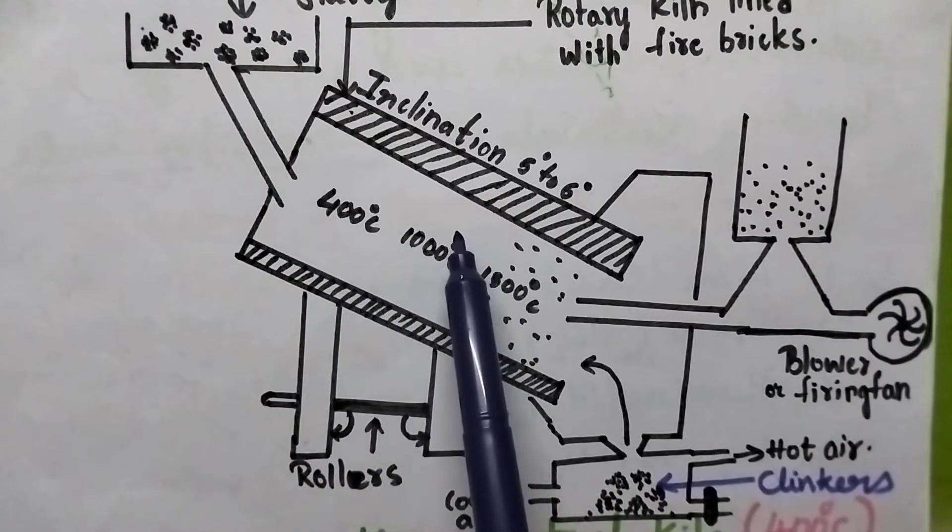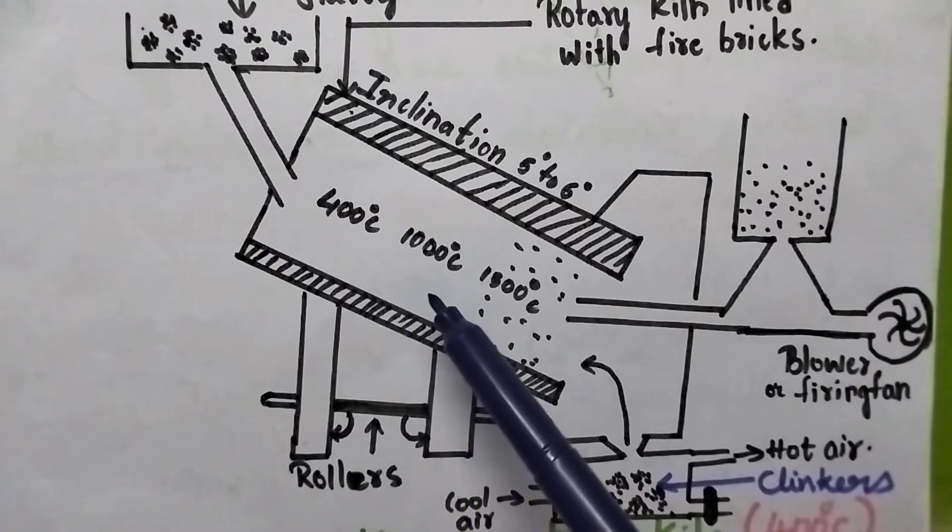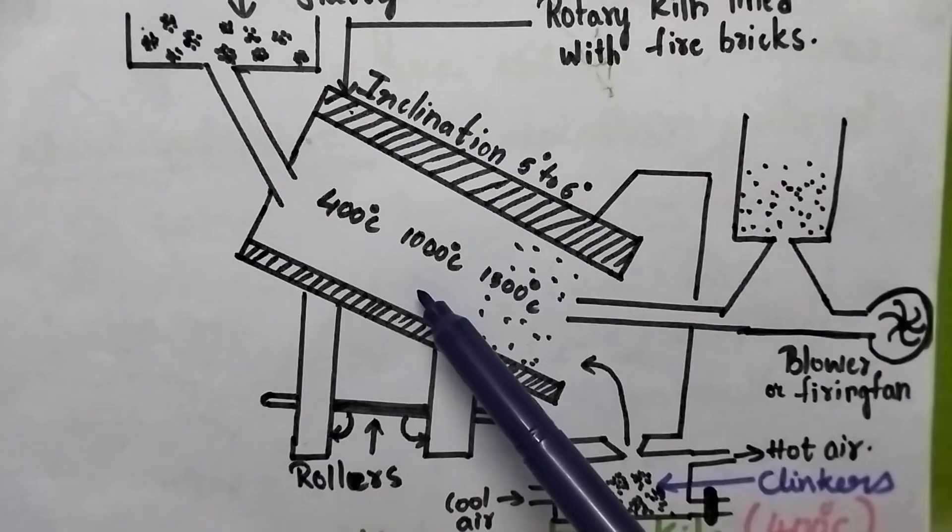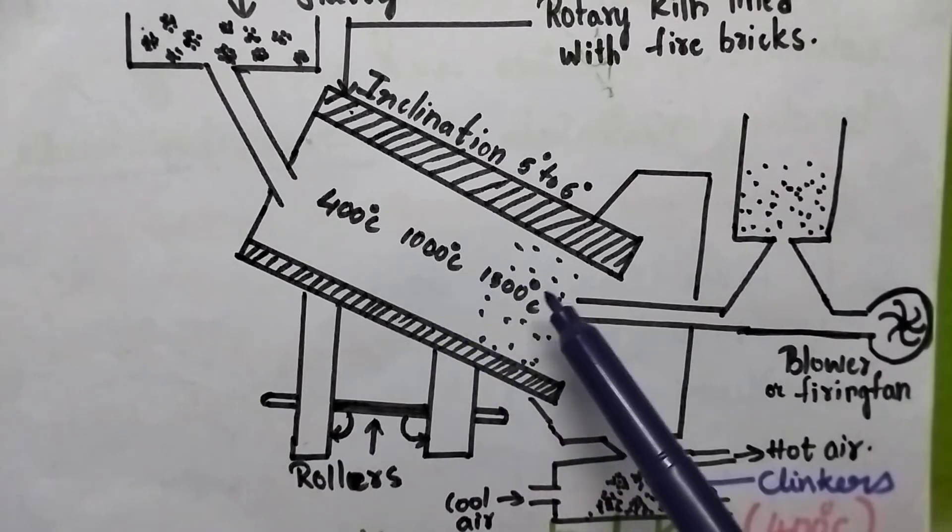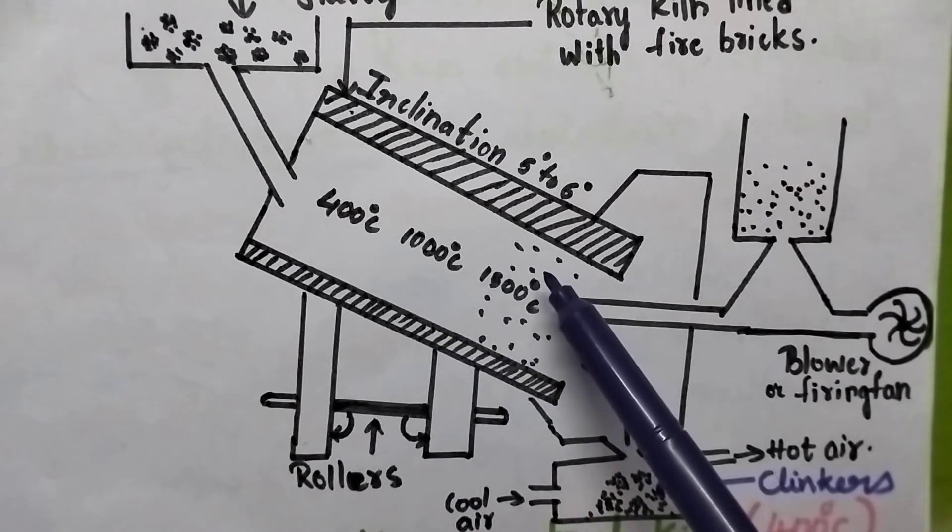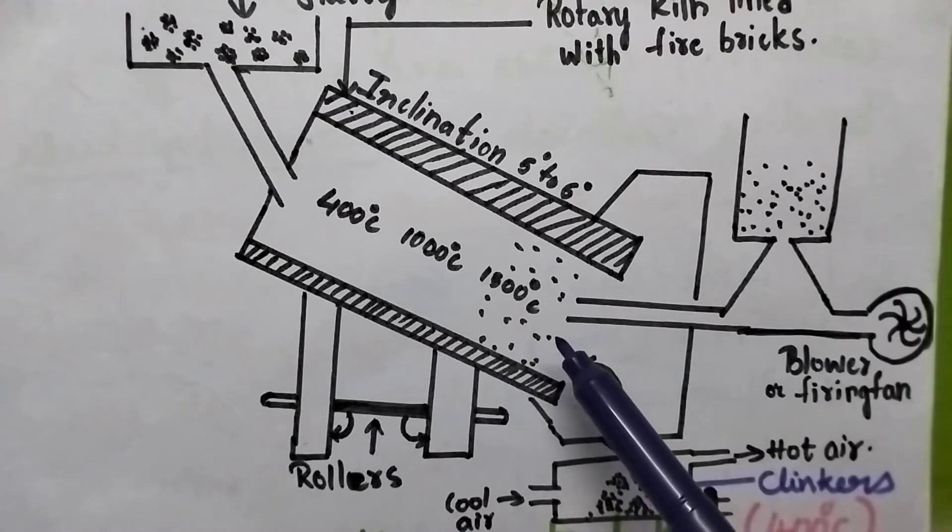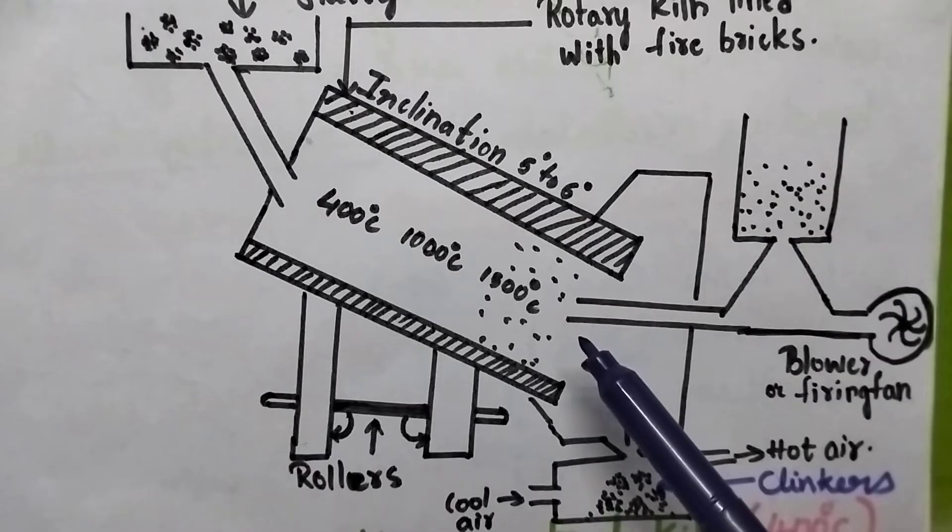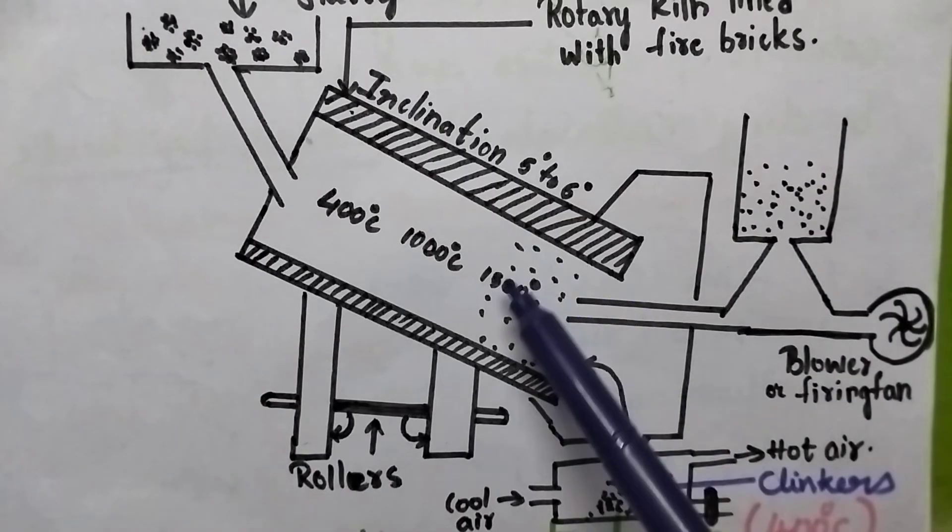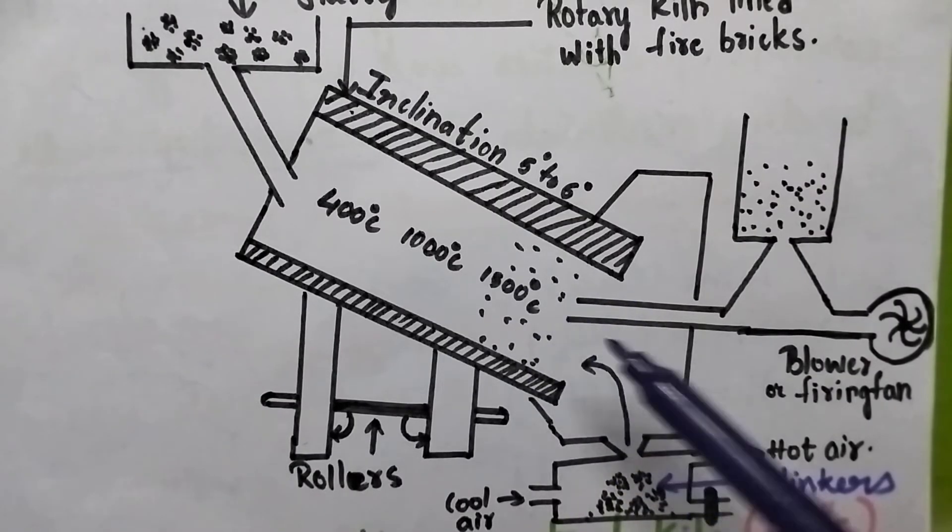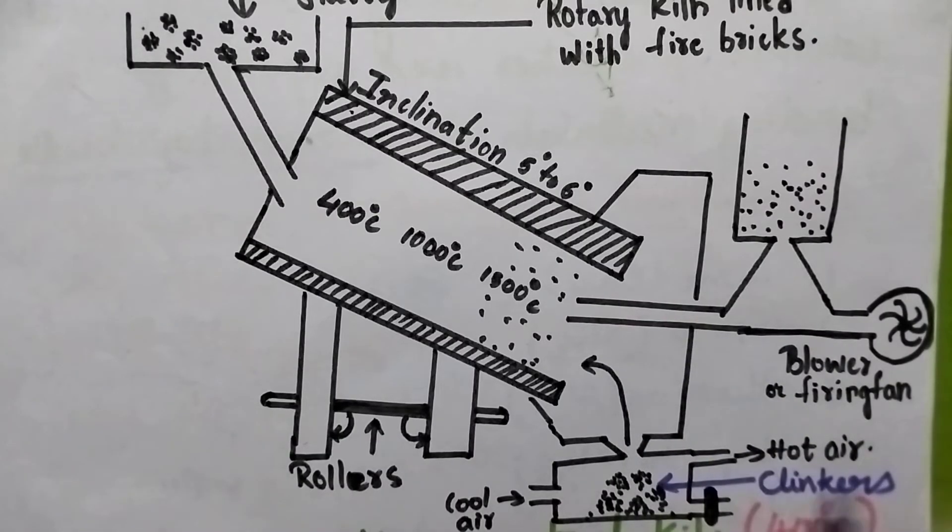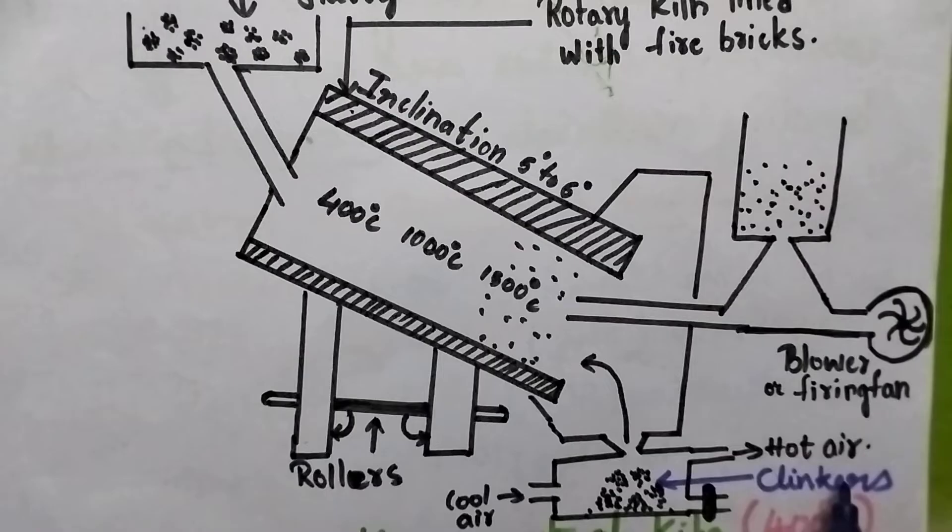The middle zone is the calcination zone, where limestone decomposes to form quick lime and carbon dioxide. The lower zone is the clinkering zone. Here very high temperatures like 1500 to 1700 degrees centigrade are maintained. Here the lime and clay are converted into aluminates and silicates, finally resulting in the formation of clinkers.